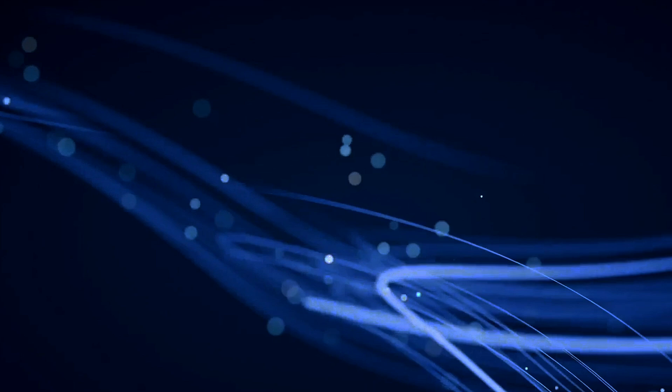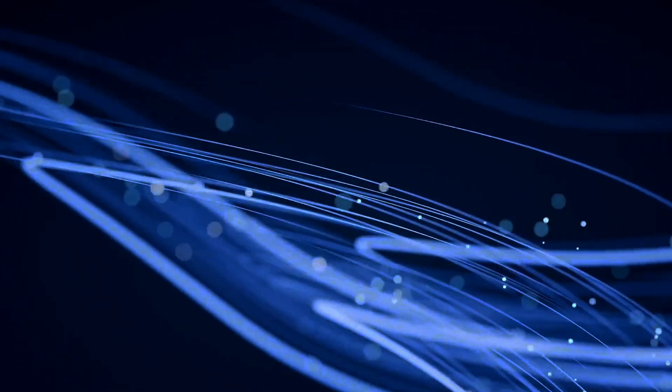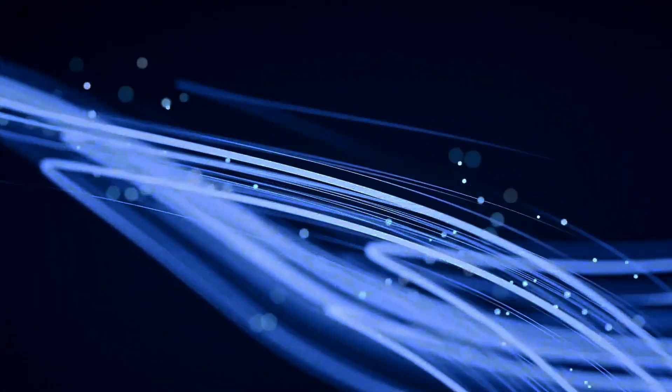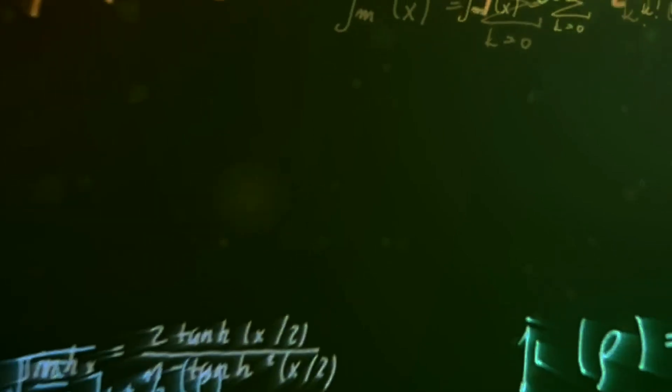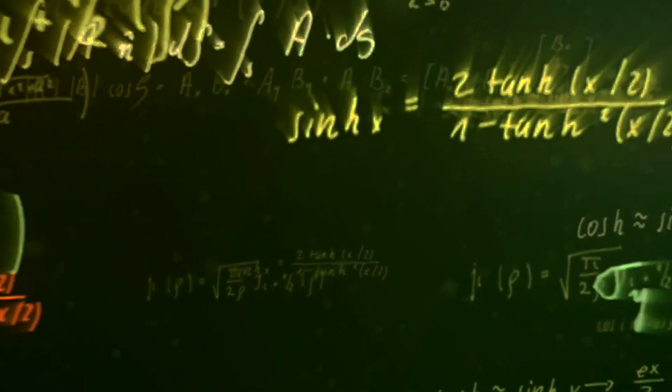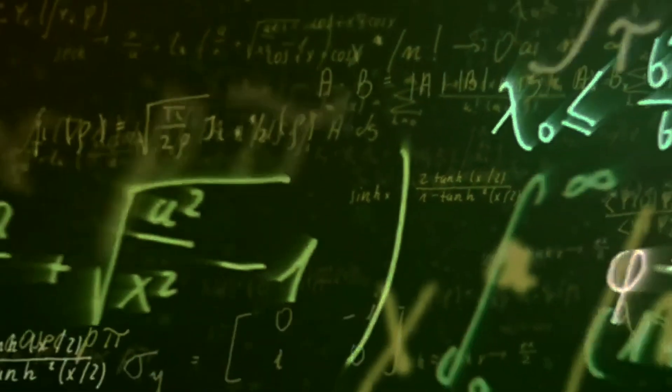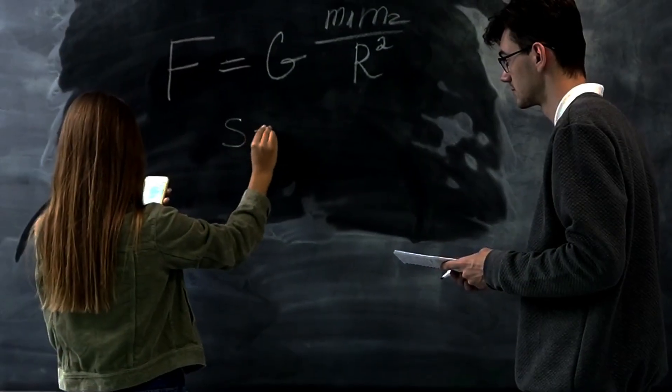In simpler terms, the conjecture posits that if the L-function of an elliptic curve is zero at a particular point, the curve has an infinite number of rational points. Conversely, if the L-function is non-zero, the curve has only a finite number of rational points.